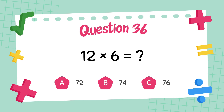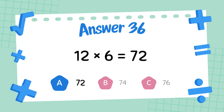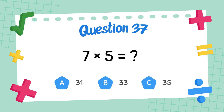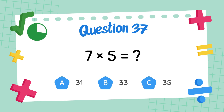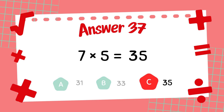What is 12 times 6? The answer is 72. What is 7 times 5? The answer is 35.